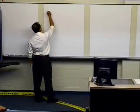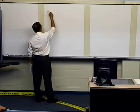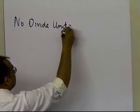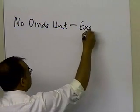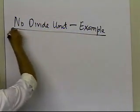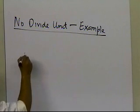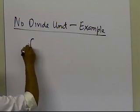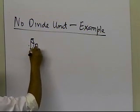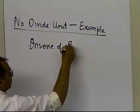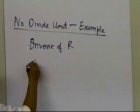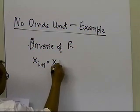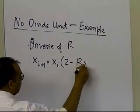Let's take an example in this segment of no-divide unit. So we were talking about that if you want to find the inverse of r, let's suppose you want to find inverse of r, then the formula which you get is x of i plus 1 is equal to x of i times 2 minus r times x of i.